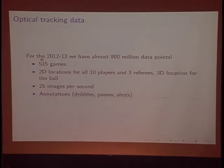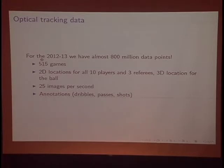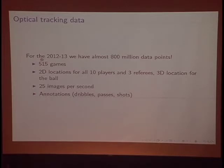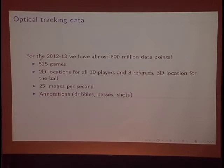Now we're moving to optical tracking data. For the dataset we have, we only have 515 games, which may not seem as big compared to something like tens of thousands of games on basketball-reference.com. But the level of detail in each of these game files is incredibly high. We have 2D XY locations for all 10 players on the court, 3D location for the ball, and we have these 25 times per second. In just these 515 games, this amounts to 800 million XY or XYZ points in space-time. We also have useful external annotations of when dribbles, passes, and shots happen, hand-coded by people watching the game in real time.